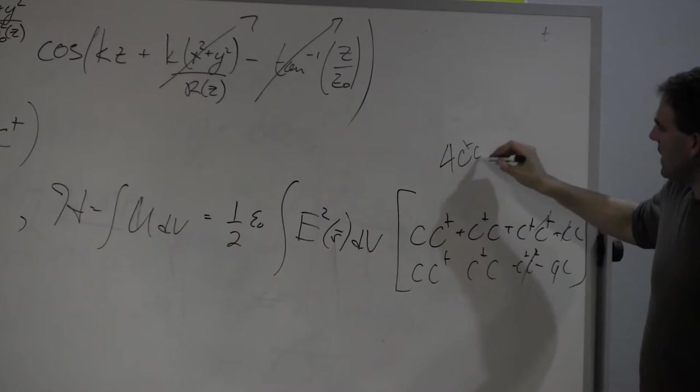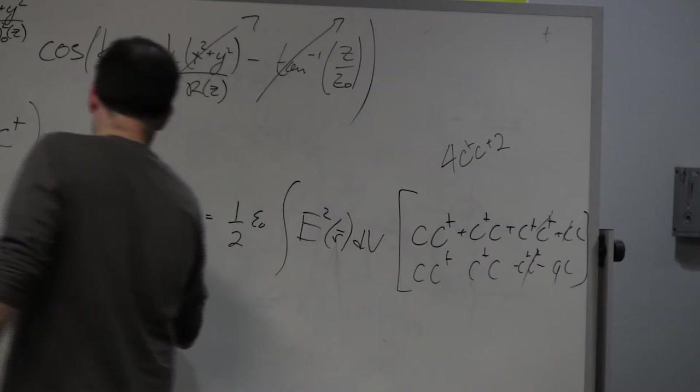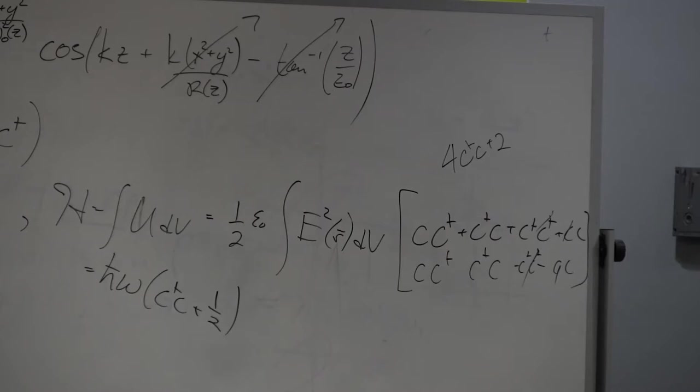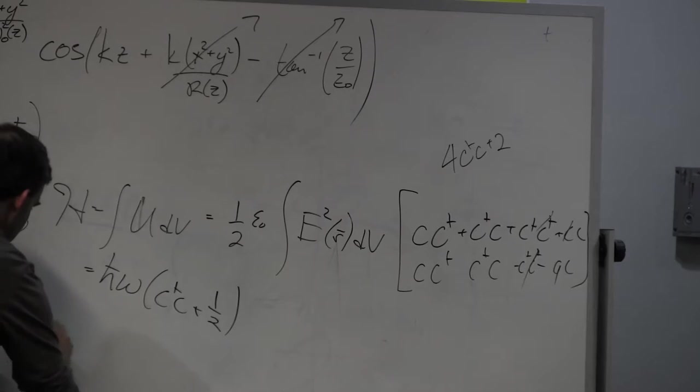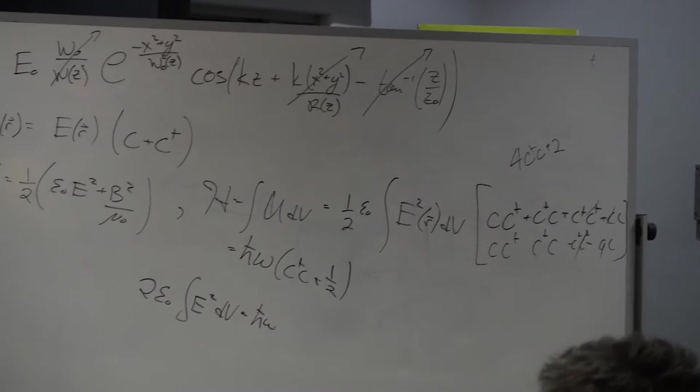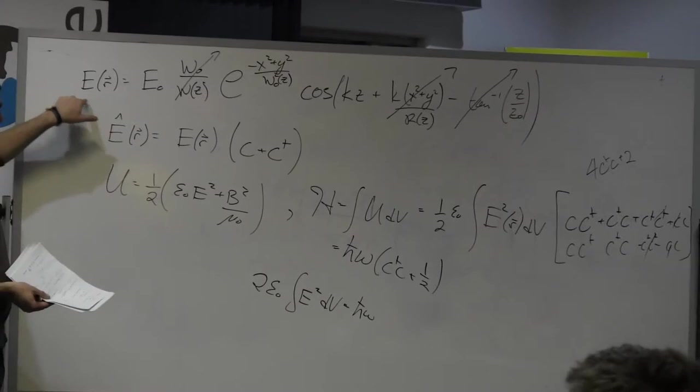This here recognizes for C dagger C plus two. And I want to get this thing in the form of h-bar omega times C dagger C plus a half. And then that tells me how it is I'm supposed to normalize my electric field. So I normalize it so that two epsilon not times the integral of E squared is h-bar.